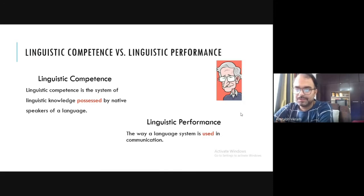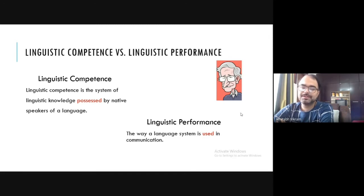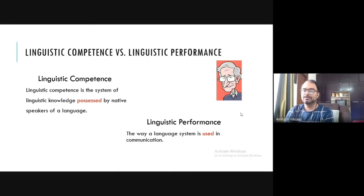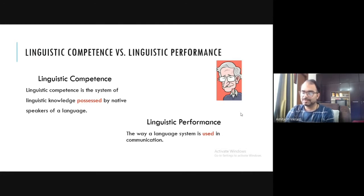A native speaker is someone like me — I am a native speaker of Hindi. There is a possibility that you are also a native speaker of Hindi, Dogri, Kashmiri, or any other language. When someone is a native speaker, we are sure the person knows at least one language and possesses it. In this possession, the person has a system — a system of linguistic knowledge established in the mind.